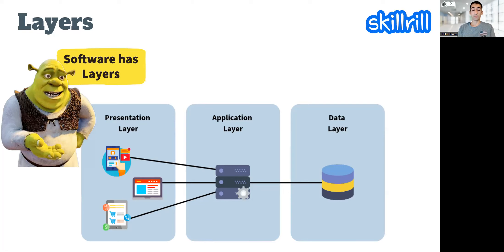In the middle we have the application layer, and at the very end we have the data layer. This shape — which looks like a container — is actually a container whose purpose is to keep the data you've entered. Think of a simple calculator app: it doesn't store any data, it just makes the calculation and the data is gone — it doesn't keep your history or personal information.